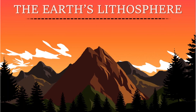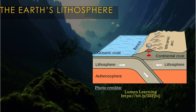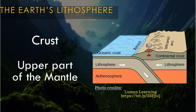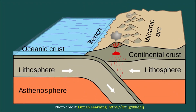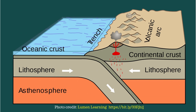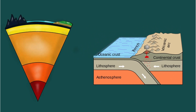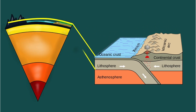The Earth's lithosphere is the solid outer section of the Earth which includes the crust, as well as the cool, dense, rigid upper part of the mantle. The lithosphere is used to explain geologic processes, particularly volcanism, earthquakes, and the formation of various surface features of the Earth, such as volcanoes, mountains, trenches, oceanic ridges, rift valleys, and lakes.